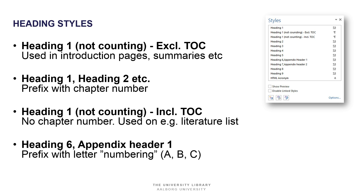Then you have Heading 1, 2, and so forth. These are prefixed with a chapter number — Heading 1 says 'Chapter 1,' and Heading 2 says '1.1' if it's the first Heading 2 in Chapter 1, and so forth. Then we have 'Heading 1, not counted, but included in the table of contents,' which will not have the chapter number prefixed but will be included in the table of contents.